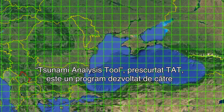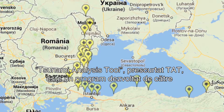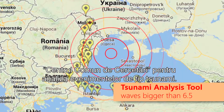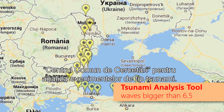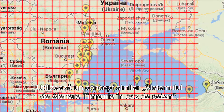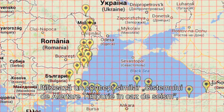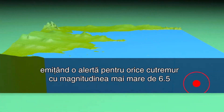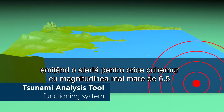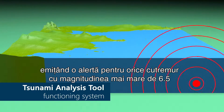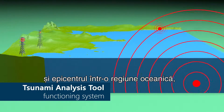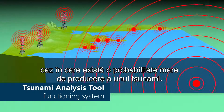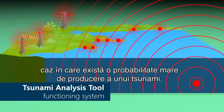The Tsunami Analysis Tool, or TAT, is a program developed by the Joint Research Center for analyzing tsunami events. It uses a similar concept as the Earthquake Early Warning System and sets the alarm for any seismic event of magnitude over 6.5 with below-water epicenters which could easily lead to a tsunami.